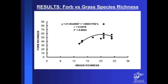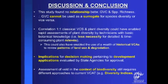For discussion and conclusion, this study found no relationship between grazing veld condition and species richness, which means grazing veld condition cannot be used as a surrogate for species diversity, or vice versa. Had a correlation been found between veld condition scores and plant diversity, this could have enabled rapid assessments of plant diversity by technicians with very basic botanical knowledge, reducing the need for detailed and time-consuming plant surveys. Unfortunately that was not the case. This could also have enabled use of the wealth of historical veld condition assessment data to review patterns of land use and degradation in retrospect.